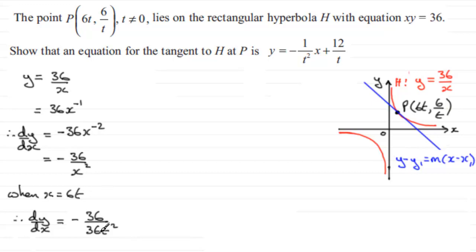This reduces down to minus 1 over t squared. Therefore dy/dx equals minus 1 over t squared.